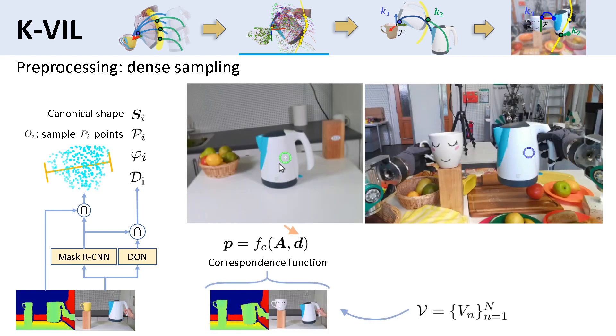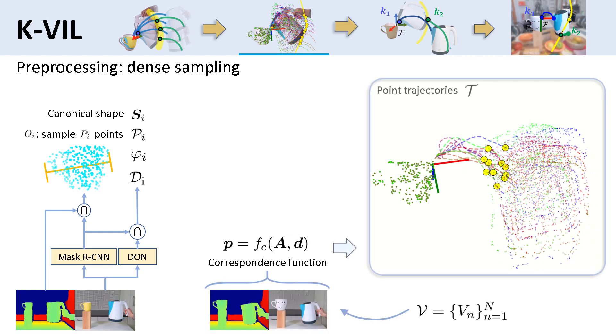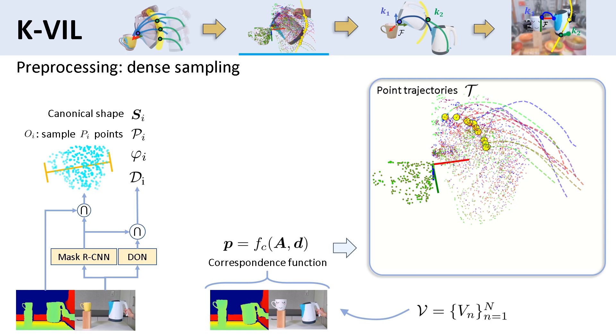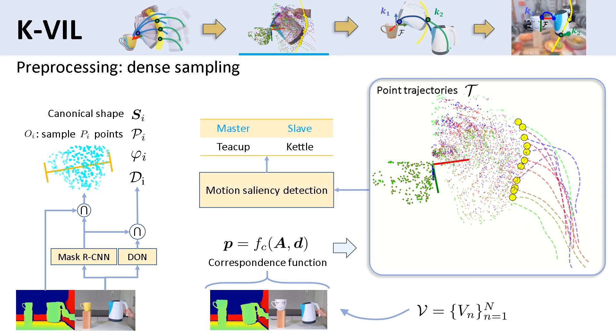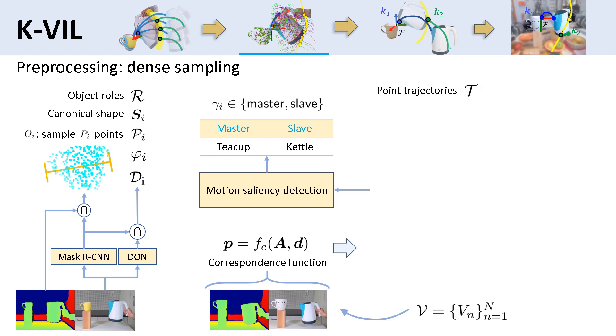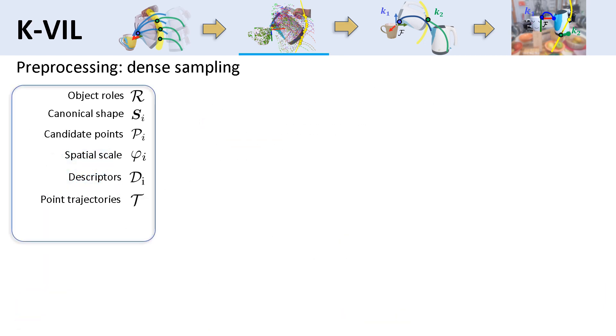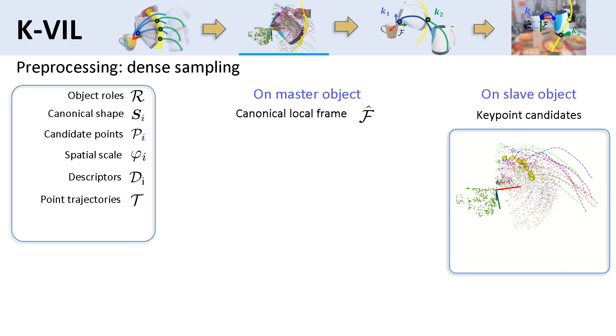We use the correspondence function to get the trajectories of all candidate points in the video and then determine the master-slave hierarchy using motion saliency detection. Then we propose to only extract the local frames for the master objects and keypoints for the slave objects.